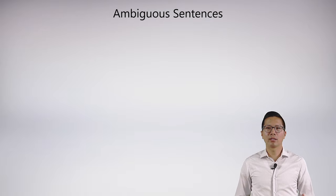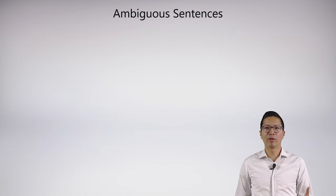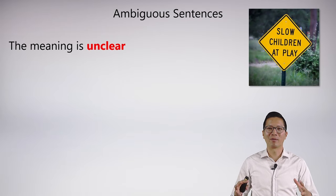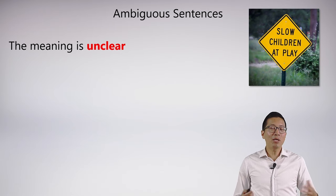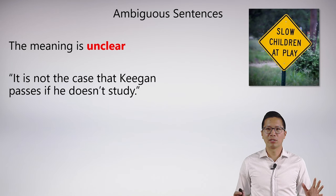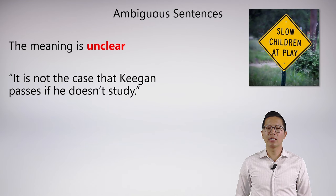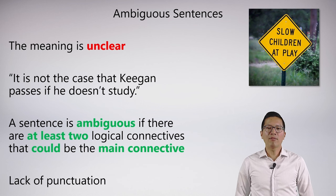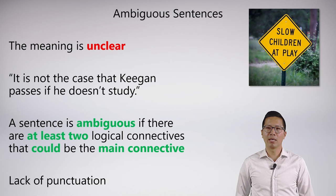The first one we're going to look at is the ambiguous nature of English. Now there are a lot of ways that English can be ambiguous, but I'm not going to focus on the more famous funny examples. An ambiguous sentence is when the meaning is unclear, but I'm going to mean that in a very specific way. A sentence is ambiguous for our purposes if there are at least two logical connectives that could be the main connective.